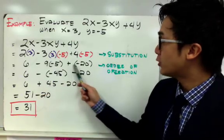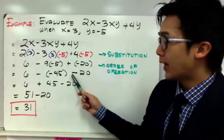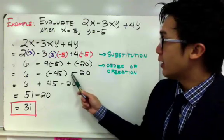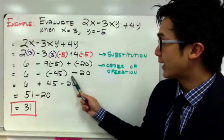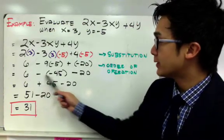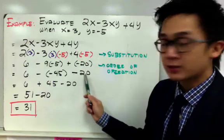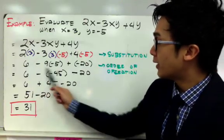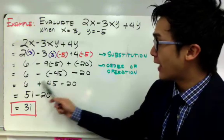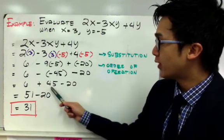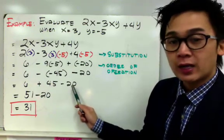And if I have plus or minus, I'm going to have a minus as an operation because positive and a negative right next to each other will turn into a negative. So I have 6 minus negative 45 minus 20. Now to simplify this operation, two negatives makes a positive, so I'll end up with 6 plus 45 minus 20.